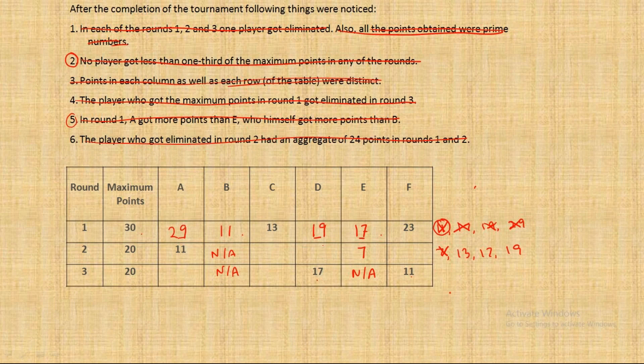Now in round two if we concentrate and see the Sudoku principle which was mentioned in the question, that nobody gets the same point in two rounds or no two people get the same points. According to that we are left with three numbers: 13, 17 and 19. Now D cannot get 17 or 19 in the second round, that means D has to get 13 in the second round.